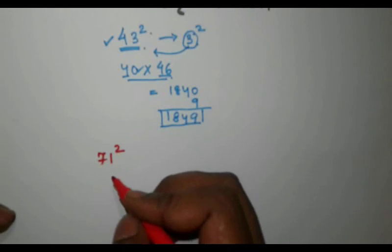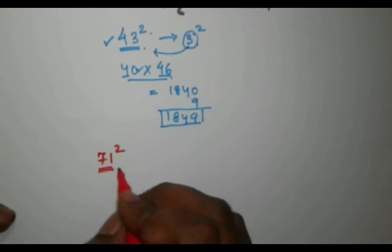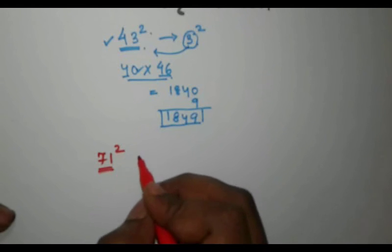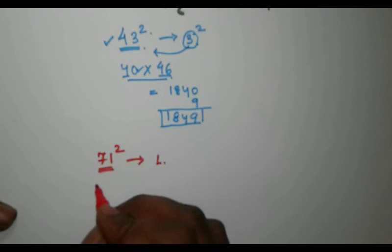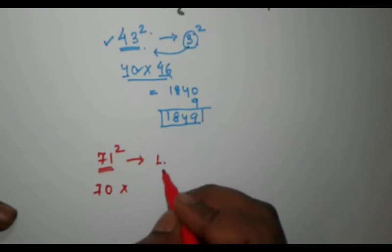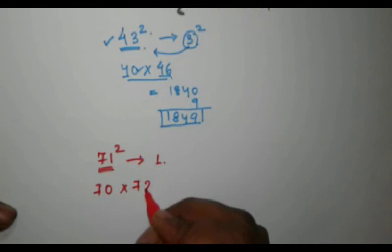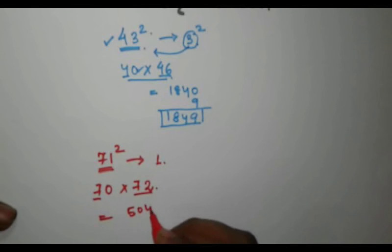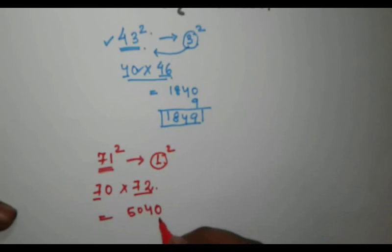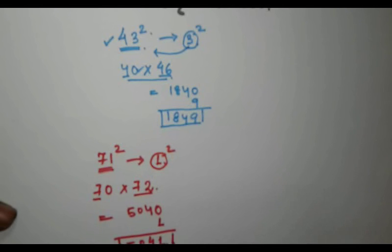To find the square of 71, first find the nearest tenth digit number, which is 70. Subtract 70 from 71, which gives us 1. Now subtract 1 from 71 to get 70, and add 1 to 71 to get 72. Multiply 72 by 7, which gives us 504, then append a zero to get 5040. Square the difference 1 to get 1, and add it to get 5041. That is the square of 71.